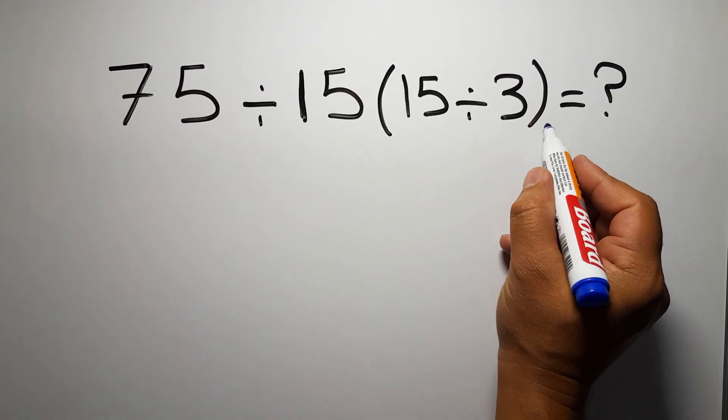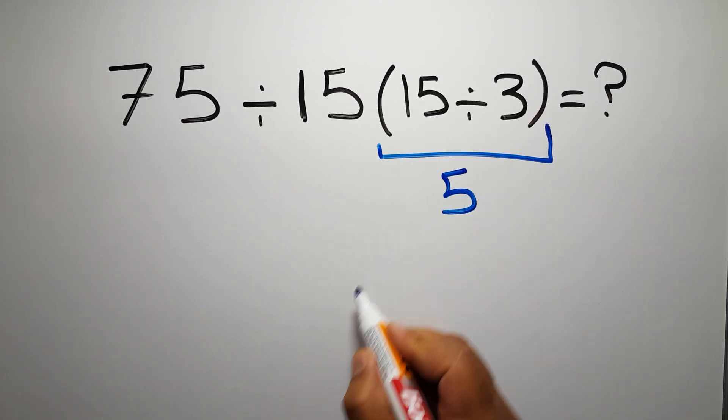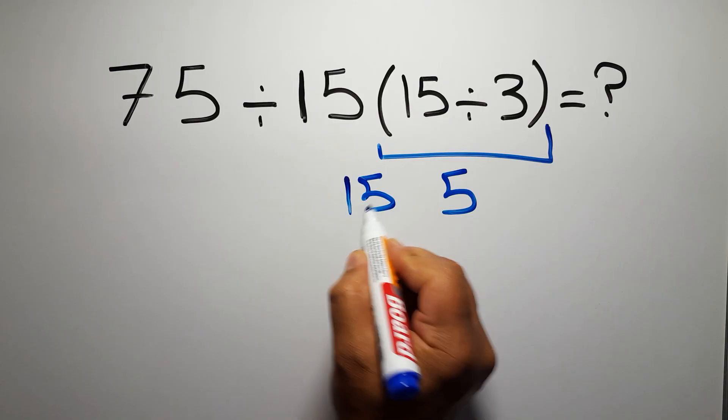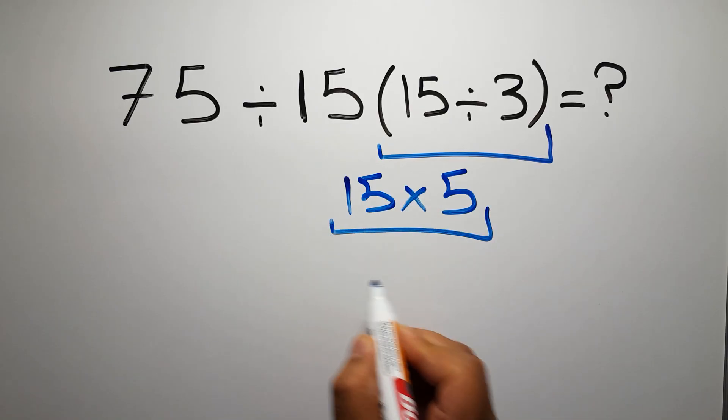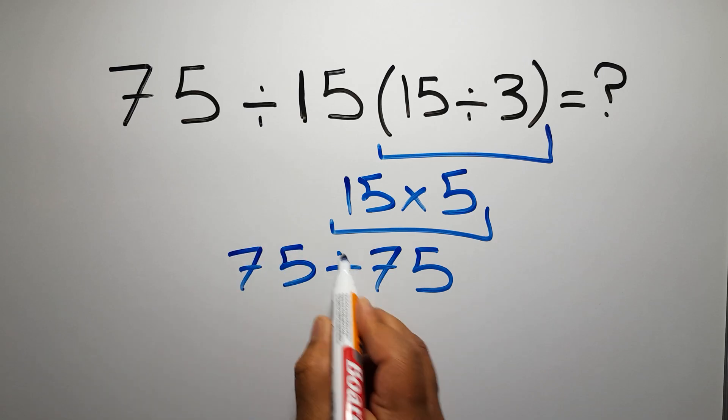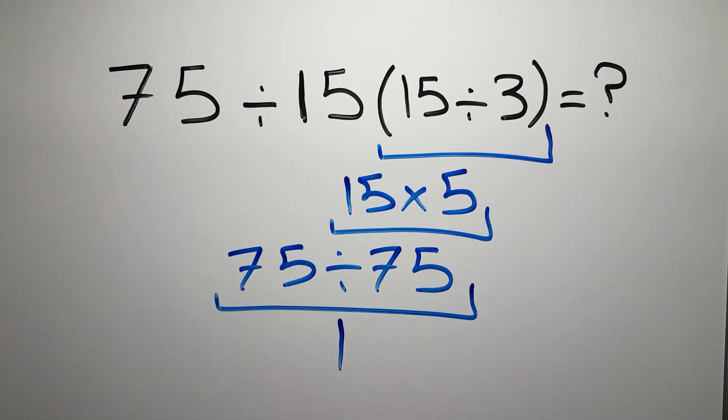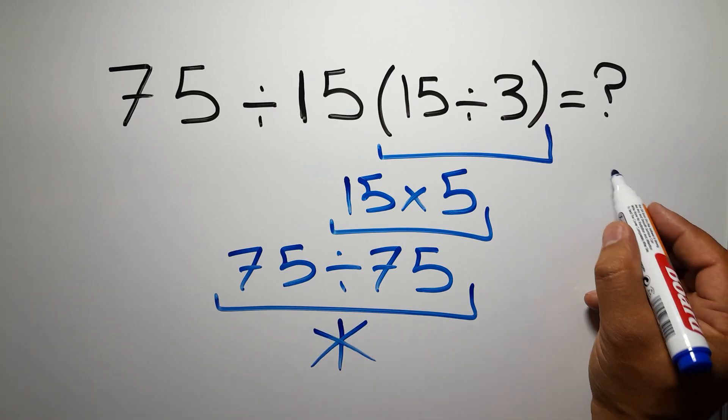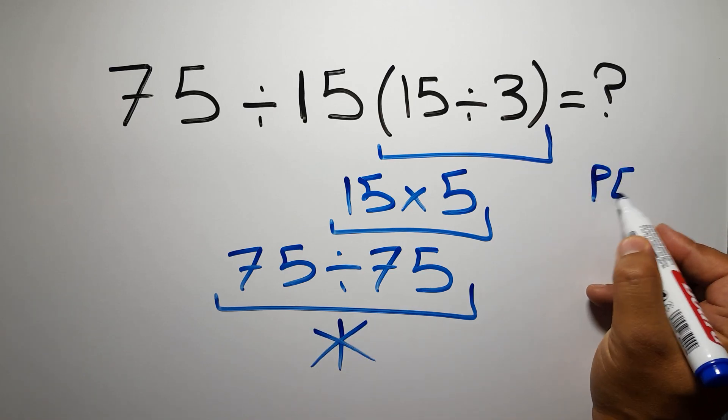15 divided by 3 equals 5, and 15 times 5 gives us 75, so 75 divided by 75 equals 1. But this answer is not correct because according to the order of operations, first we have to do parentheses, then...